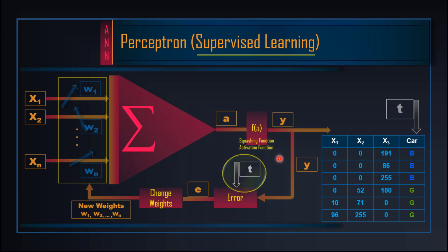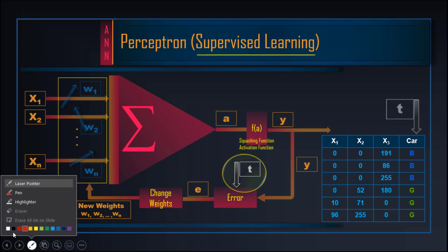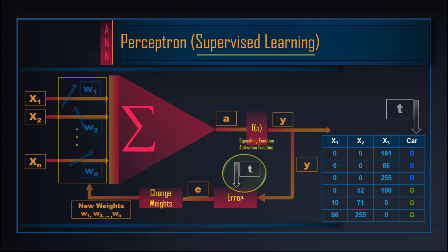Supervised learning میں ہمارے پاس ہمیشہ labeled data ہوتا ہے۔ ہمیں پتا ہوتا ہے کہ ہماری inputs کیا ہیں اور outputs کیا ہونی چاہئیں۔ جیسے machine learning والی ویڈیوز میں ہم car کا example لے کر چلتے تھے — inputs known ہوتی ہیں اور outputs بھی known ہوتی ہیں۔